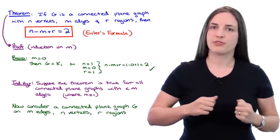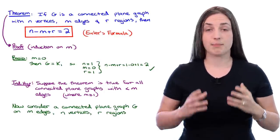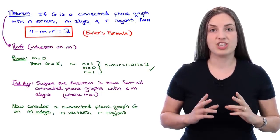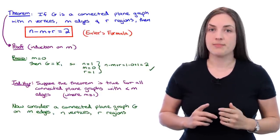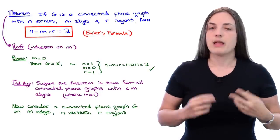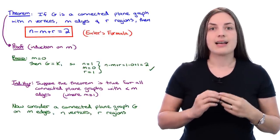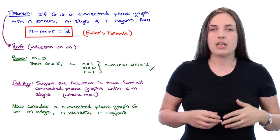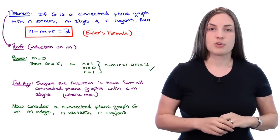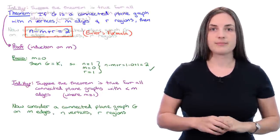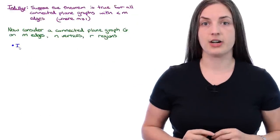Let's start by letting G be a connected plane graph on M edges with N vertices and R regions. Our proof now divides up into two cases, depending on whether or not our graph G is a tree.